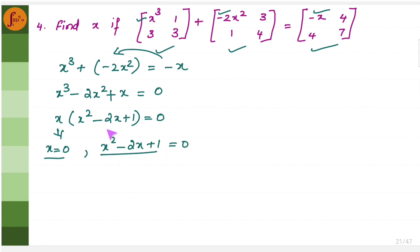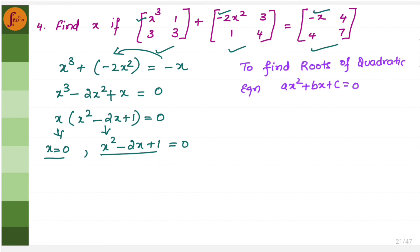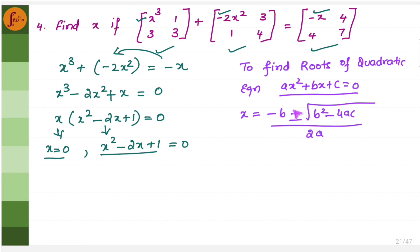We need to factorize x squared minus 2x plus 1 and find its roots. Using the quadratic formula for ax squared plus bx plus c equals 0, the roots are x equals minus b plus or minus root of b squared minus 4ac, all divided by 2a.